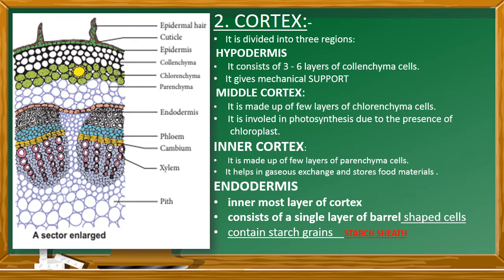The first region is hypodermis. It is made up of collenchyma cells and gives mechanical support. Collenchyma cells are ovoid-shaped cells without intercellular spaces — cells without gaps. There are three to six layers of collenchyma cells in the hypodermis.